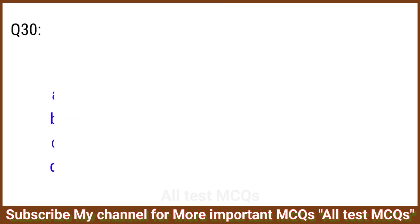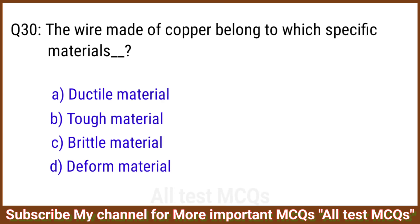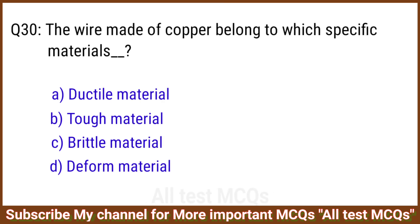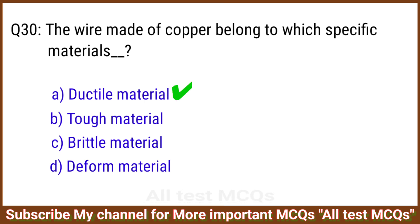Q30. The wire made of copper belongs to which specific category of materials? The right answer is option A.